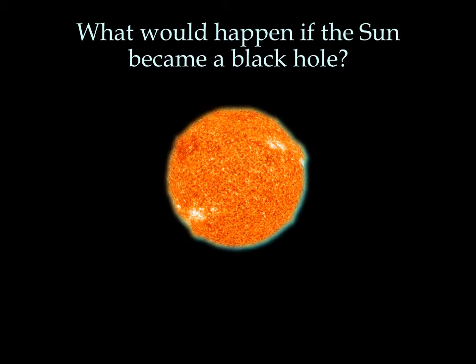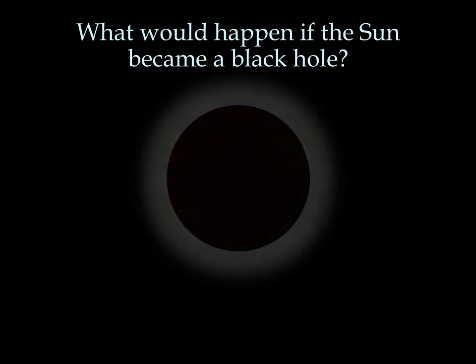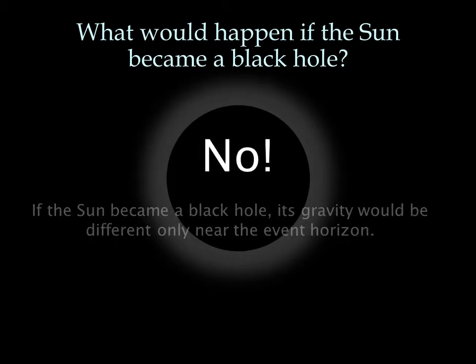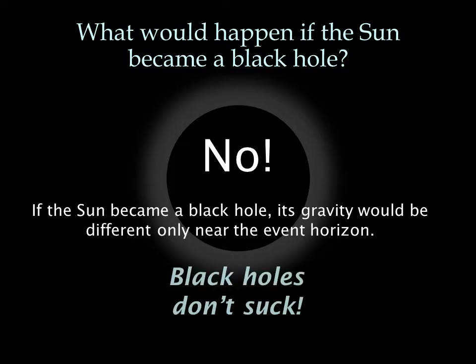Theoretically, what would happen if our sun became a black hole? Would we get sucked in? Happily, no. The only way to get sucked in is to cross the event horizon. The sun has a Schwarzschild radius of about 3 kilometers, so if the sun became a black hole, we'd have to get within 3 kilometers in order to cross the event horizon. The orbits of the planets would not change, although without the light from the sun, life on Earth would not survive.